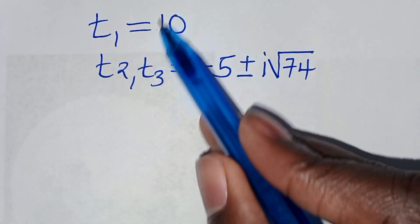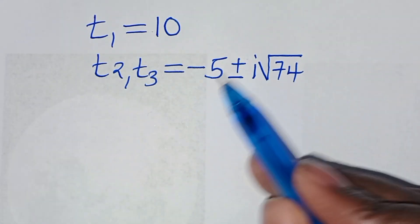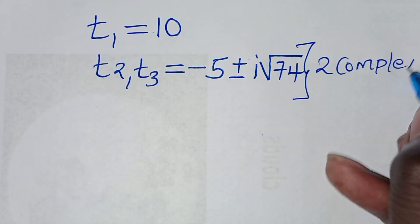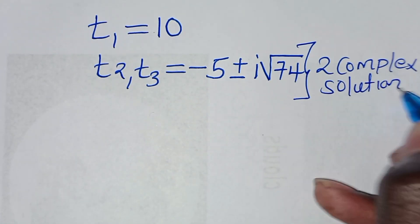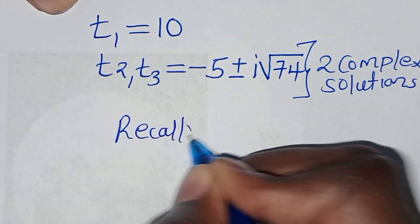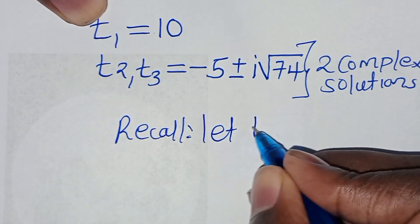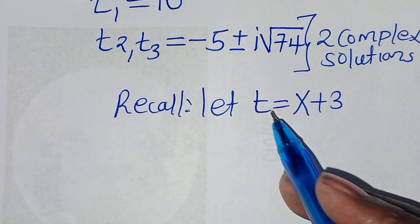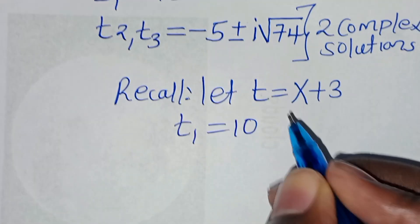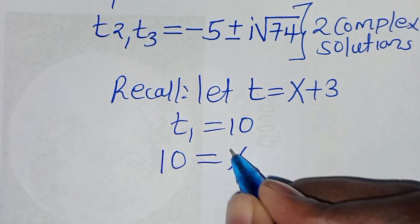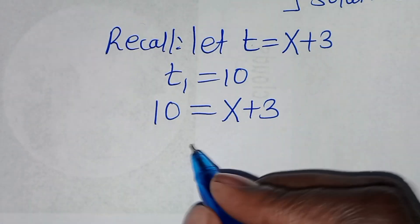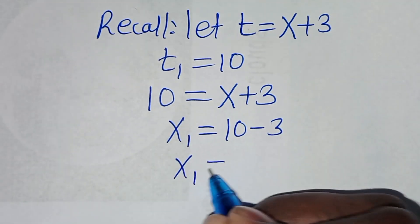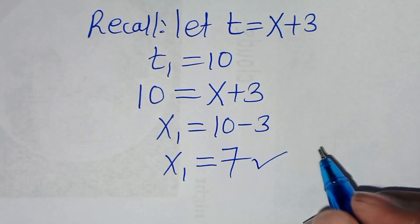So t₁ = 10, and t₂, t₃ = −5 ± i√74, which are two complex solutions. Recalling that t = x + 3, for t₁ = 10 we substitute: 10 = x + 3, so x₁ = 10 − 3 = 7. The first value of x is 7.